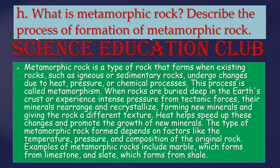What is metamorphic rock? Describe the process of formation of metamorphic rock. Metamorphic rock is a type of rock that forms when existing rocks — such as igneous or sedimentary rocks — undergo changes due to heat, pressure, or chemical processes. This process is called metamorphism. When rocks are buried deep in the Earth's crust or experience intense pressure from tectonic forces, their minerals rearrange and recrystallize, forming new minerals.